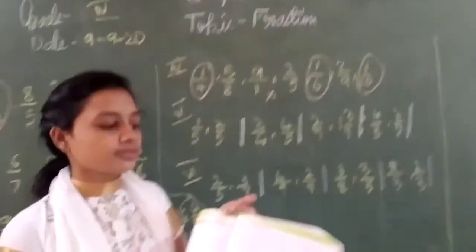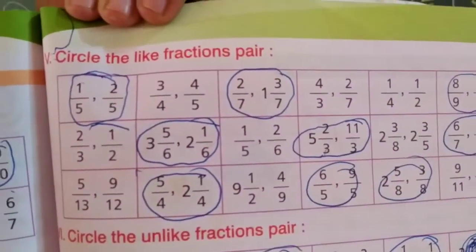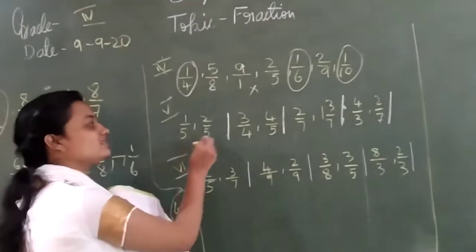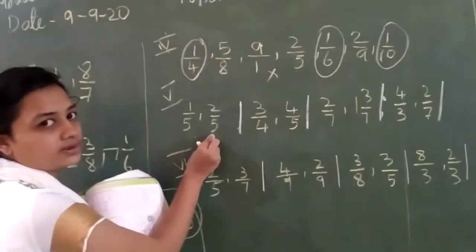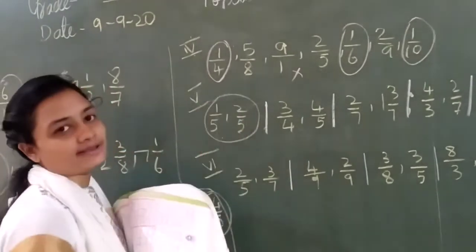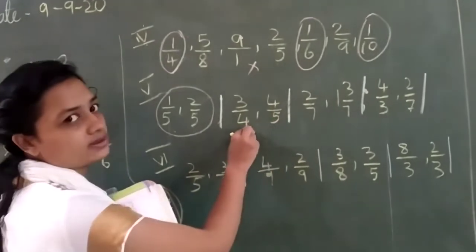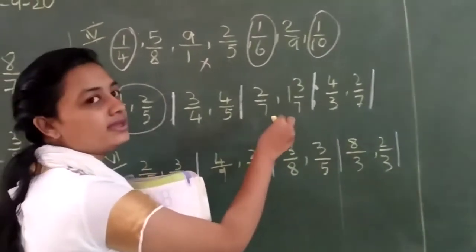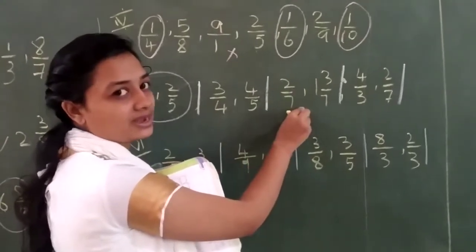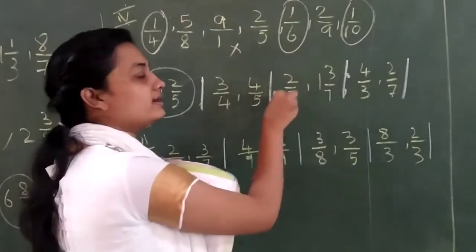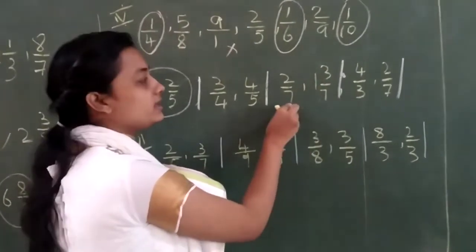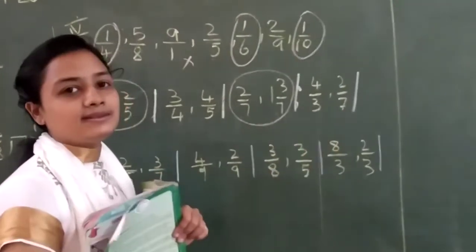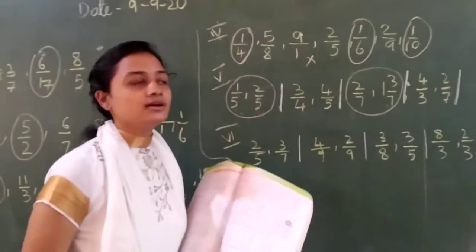Fifth question: circle the like fractions. Like fractions have the same denominator. Let's check: five and five — same denominator, so this is a like fraction. Here: four and five — different denominators, not a like fraction. Here: seven and seven — same denominators, so this is a like fraction. Even if it is a mixed fraction or any type, if the denominators are the same, it is a like fraction. The next one: different denominators, so no. You check and write the remaining ones.